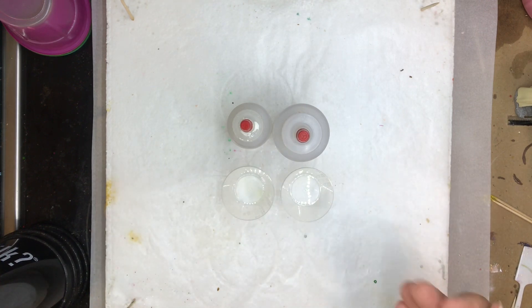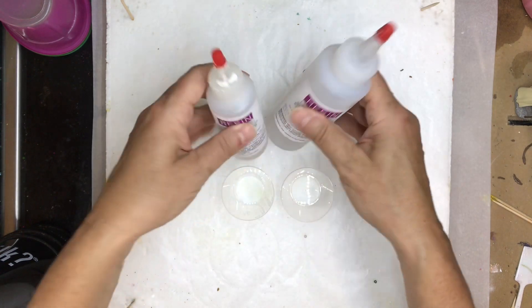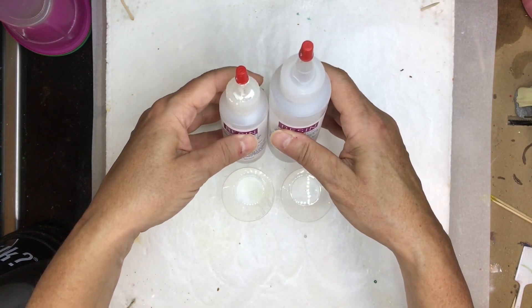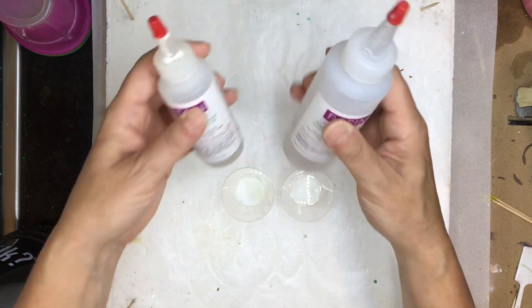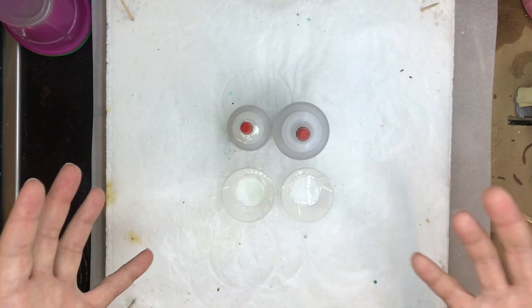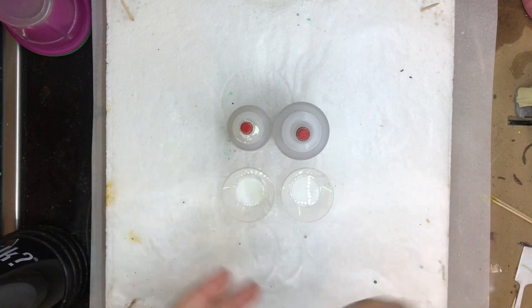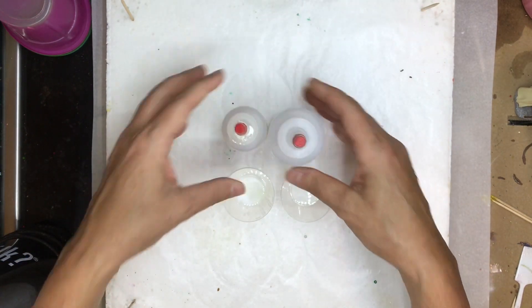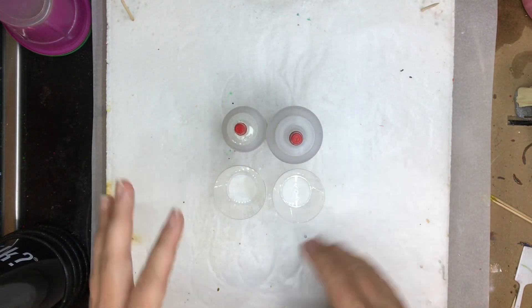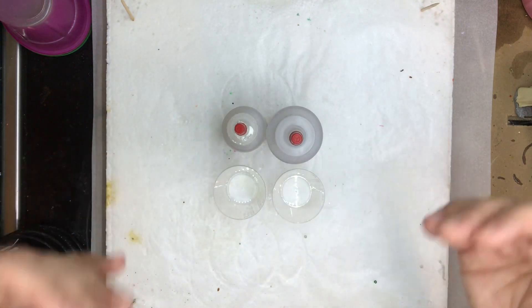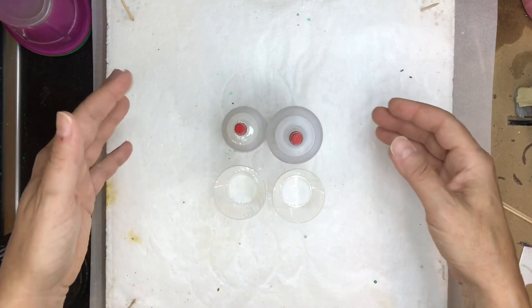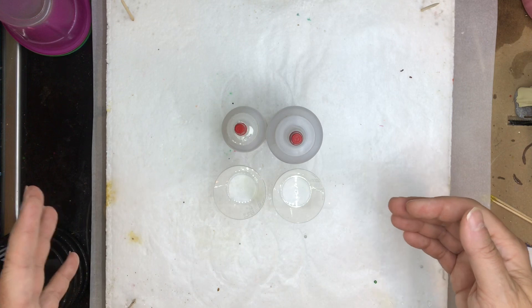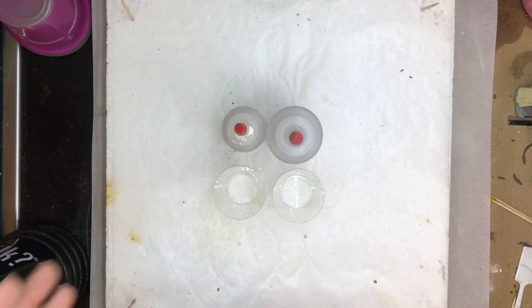There's several factors that go into when a resin hits gel time. Obviously the warmer the resin, the sooner it's going to hit gel time. The more resin you mix, the more heat you're going to create, so the sooner you're going to hit that gel time. And of course gel times vary amongst resins.